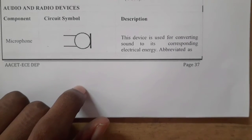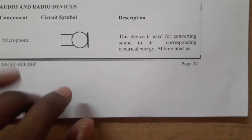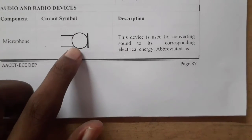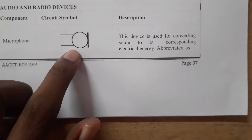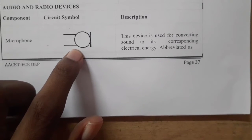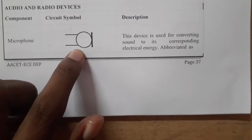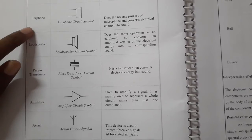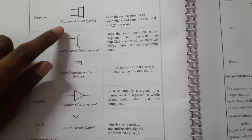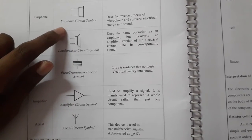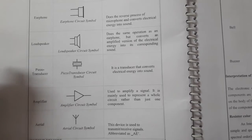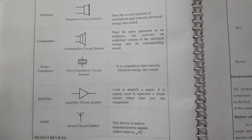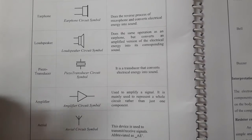Next is audio and radio devices. There are different types of components. First is the microphone — this is the circuit symbol. A microphone converts sound energy into electrical energy. Next is earphones — this is the circuit symbol. Earphones perform the reverse process, converting electrical energy into sound energy.